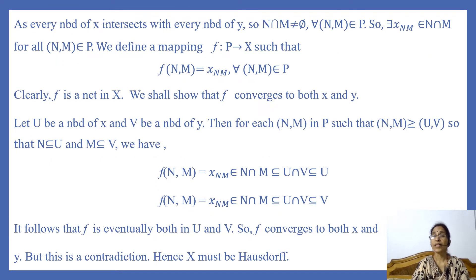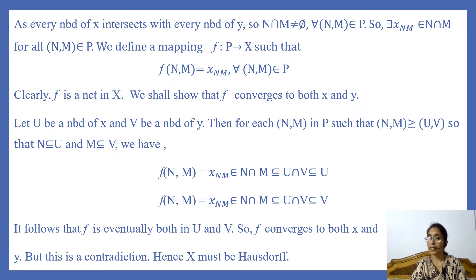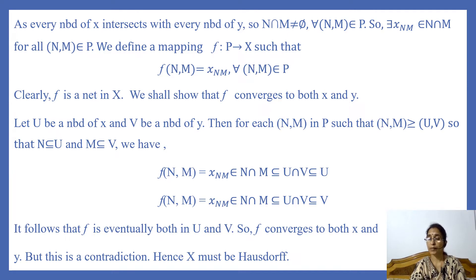As every neighborhood of X intersects every neighborhood of Y, N ∩ M is non-empty for every ordered pair (N, M) in P. So there exists some element X_(N,M) belonging to N ∩ M for all (N, M) in P. We define a mapping F from P to X such that F(N, M) = X_(N,M) for every (N, M) in P. Since P is a directed set, F is a net in X.